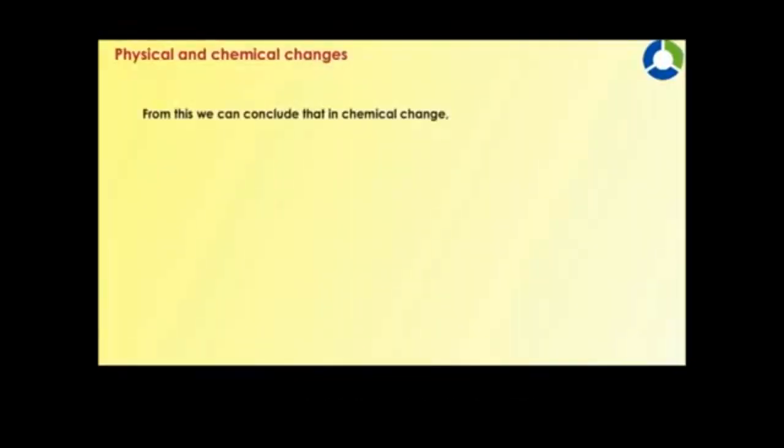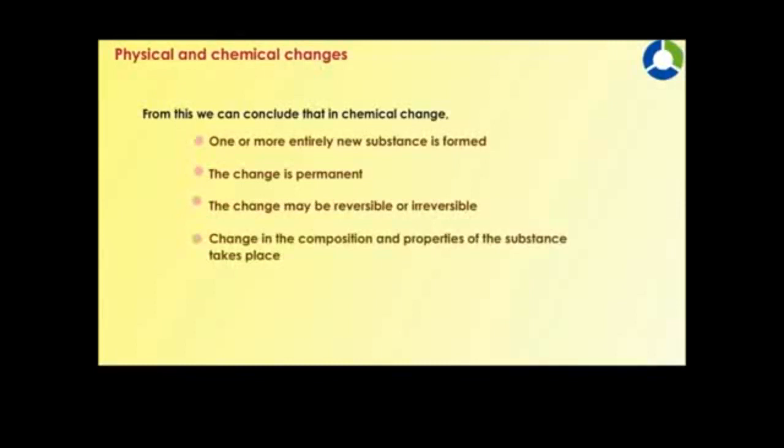From this, we can conclude that in a chemical change: 1. One or more entirely new substance is formed. 2. The change is permanent. 3. The change may be reversible or irreversible. 4. Change in the composition and properties of the substance takes place.